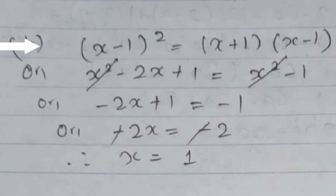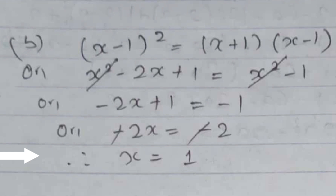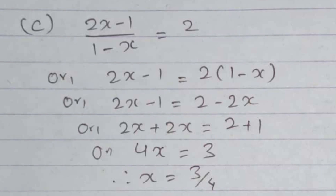Question 2b: (x − 1)² = (x + 1)(x − 1). Using the formula (a − b)² = a² − 2ab + b²: x² − 2x + 1 = x² − 1 (using a² − b² for the right side). Cancelling x² from both sides: −2x + 1 = −1, so −2x = −2, and x = 1. Question 2c is similar and left for practice — the answer is provided for you to check your work.